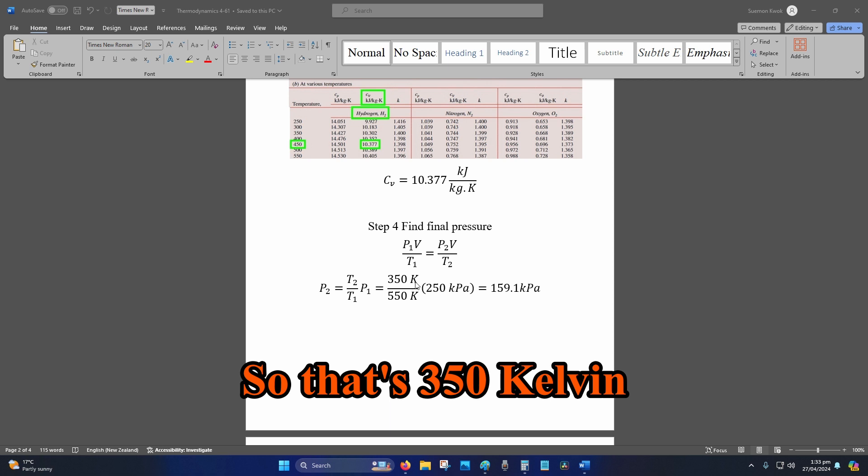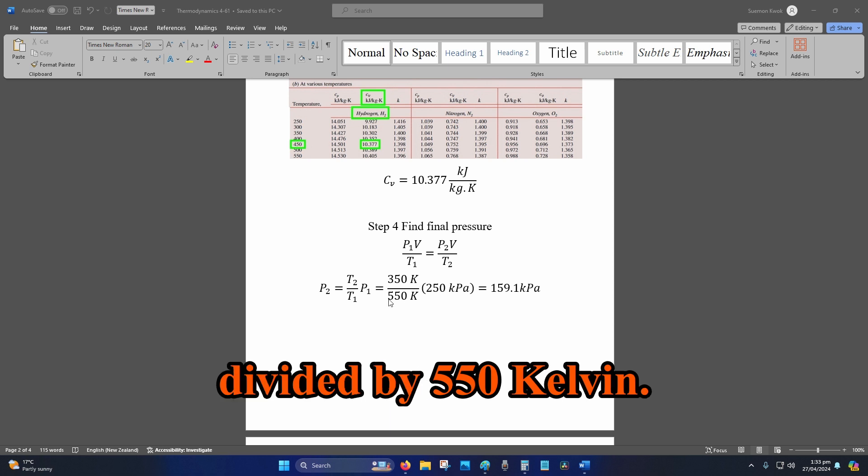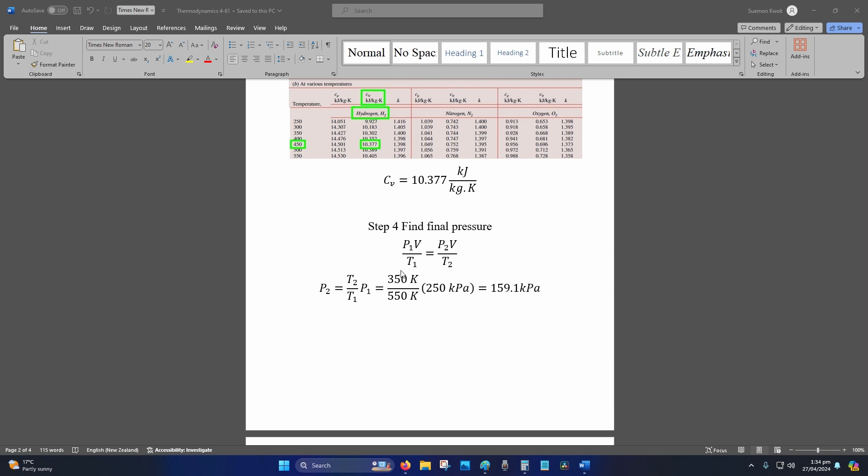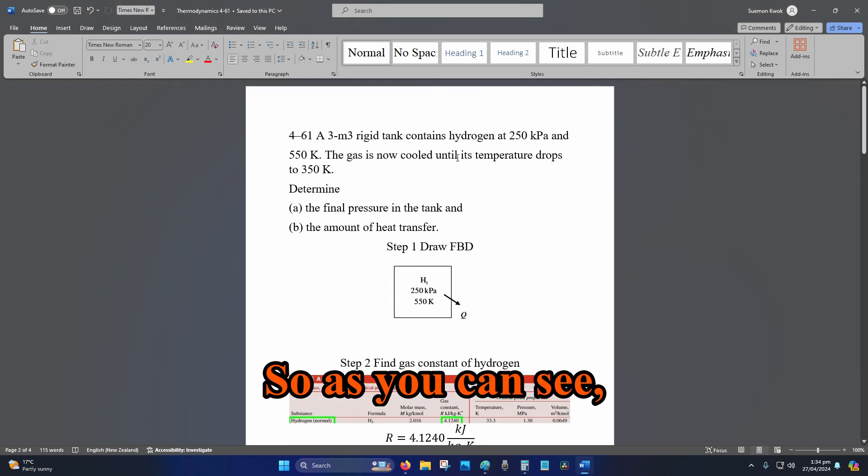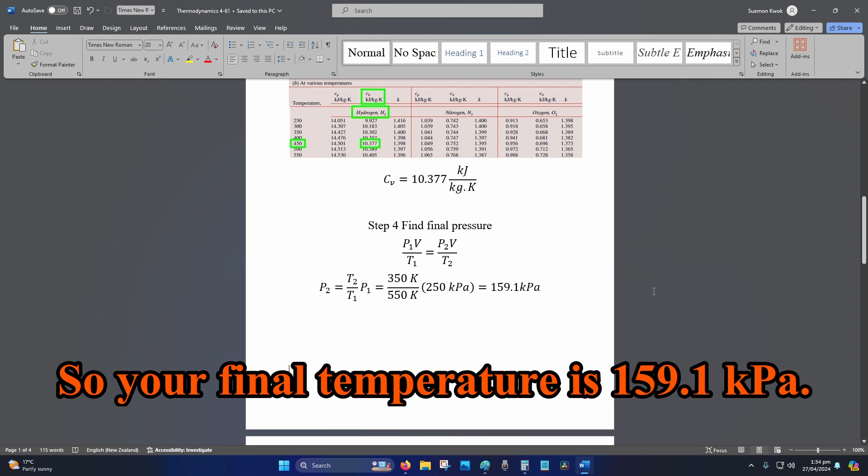That's 350 Kelvin divided by 550 Kelvin. The temperatures are given in the question, same with the pressure. As you can see, here are all the values. Your final temperature is 159.1 kPa.